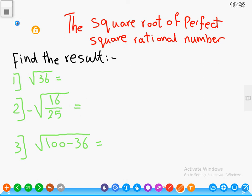Hello, our lesson today is about the square root of perfect square rational numbers. Okay, at the first, find the result: root of 36. To find the root of 36, we will find the number whose square is 36.